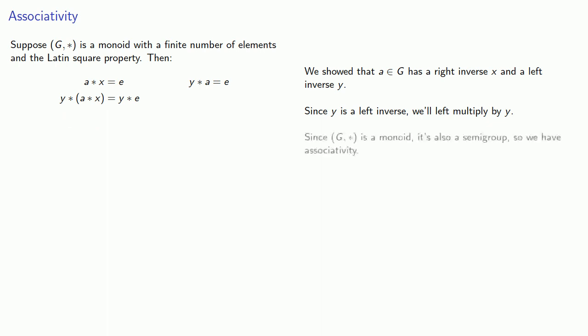And since G-star is a monoid, it's also a semi-group, and so we have associativity. And so we can regroup, I mean re-associate. Now since Y is a left-inverse, we know that Y-star A is the identity. And since E is the identity, we know that E-star X is just X. And that tells us X is equal to Y.